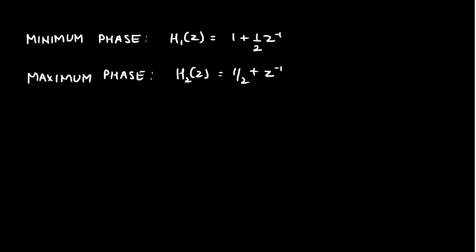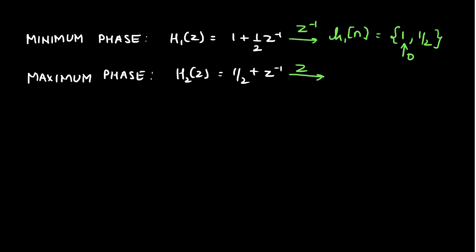Now let's look at another property. We had considered the example for the minimum phase system as H1(z) = 1 + (1/2)z⁻¹. Taking the inverse Z-transform, we get h1(n) with coefficients 1 and 1/2 — only two coefficients — where the value 1 is located at n equal to 0. For the maximum phase system example, H2(z) = 1/2 + z⁻¹, and the inverse Z-transform gives h2(n) where the value 1/2 is located at n equal to 0.